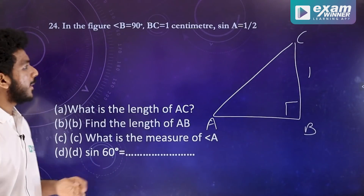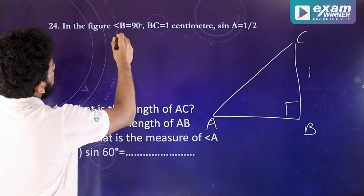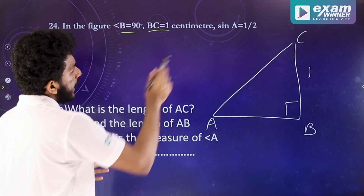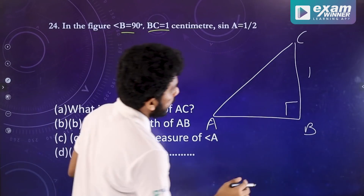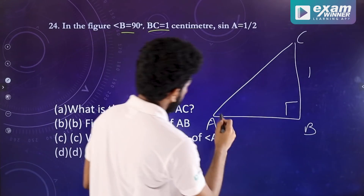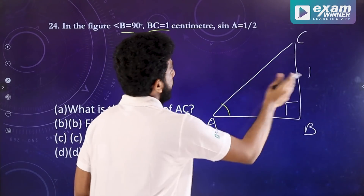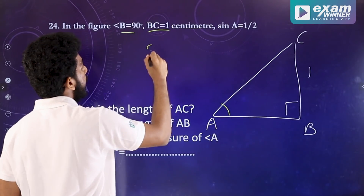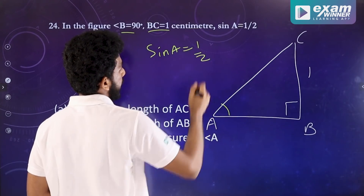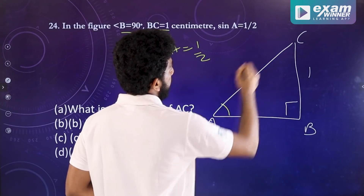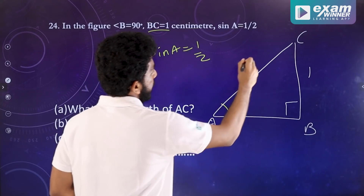There is a question in trigonometry with a diagram. B is 90 degrees, BC is 1 cm, and sin A equals 1/2. Sin A is opposite over hypotenuse equals 1/2. BC is 1 and AC is 2.